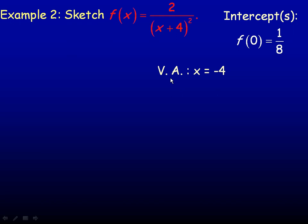Let's take a look at asymptotes. We didn't need to worry about that with a polynomial function, but this one is rational, so there is a vertical asymptote. The vertical asymptote is a place where the function is undefined. Negative 4 is what makes the denominator equal to 0, so it's a restriction on the domain — x cannot equal negative 4. The vertical asymptote is x equals negative 4.